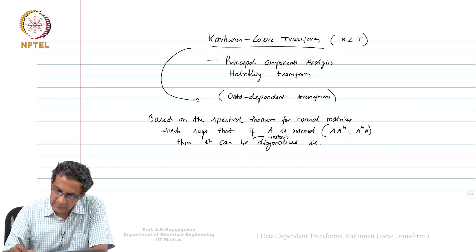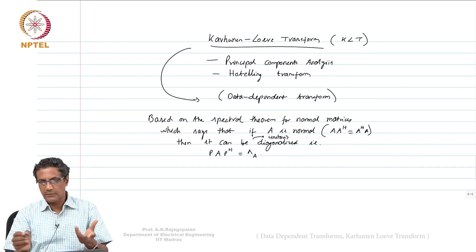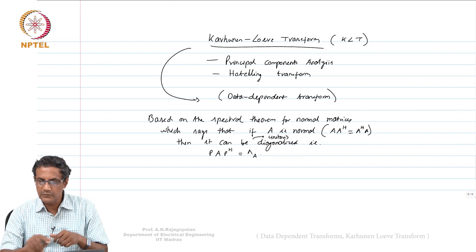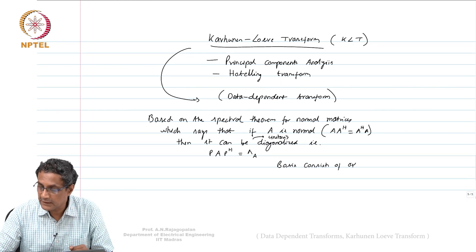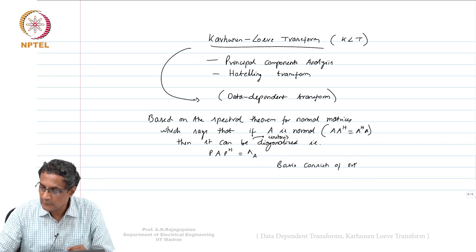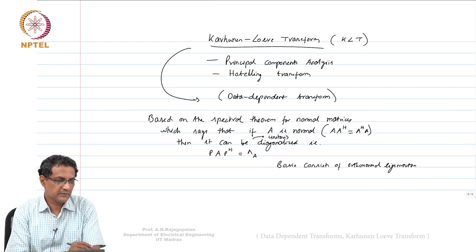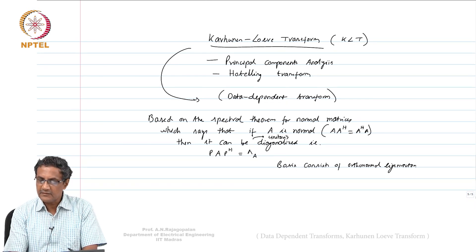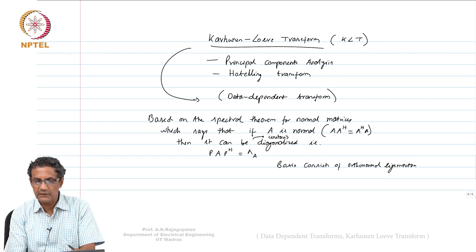The powerful thing about this is that it gives you a basis consisting of orthonormal eigenvectors. That is where its strength lies. To understand why eigenvalues and orthonormal eigenvectors are so important from a statistical perspective, let us take a small diagram. Suppose somebody gives me some data points that are spread around a line — kind of ellipsoidal in distribution.